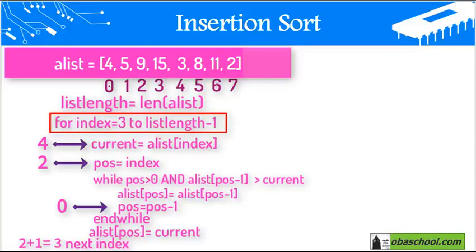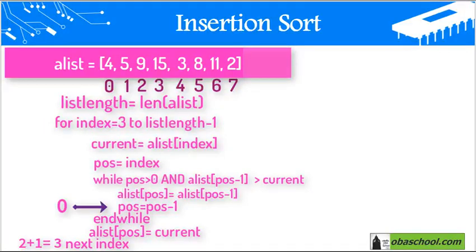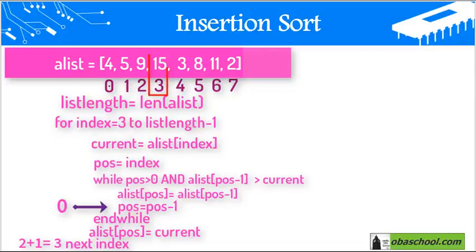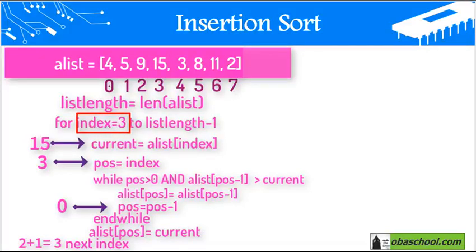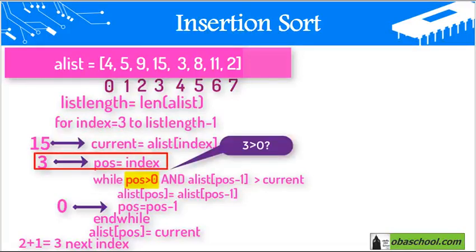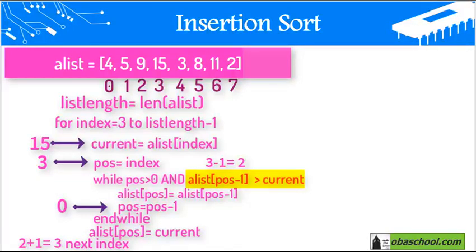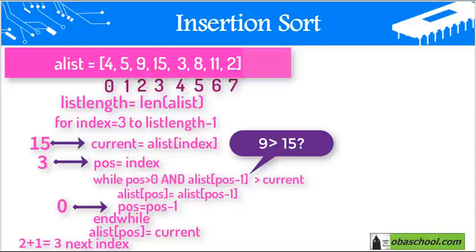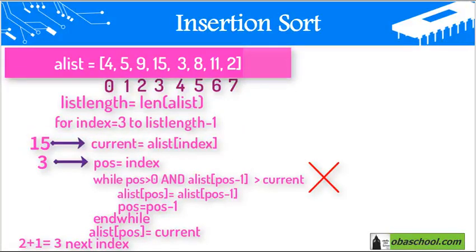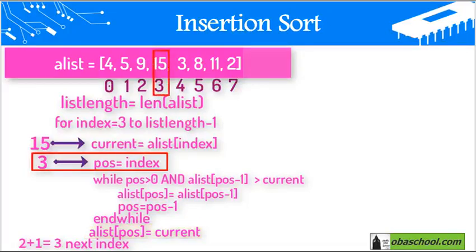For index equal 3 to list length minus 1, we are putting in variable current a list index which is 3. Index 3 contains 15, and then we continue to pause equal index. The index is 3, so pause takes value 3. We enter the while loop: while pause (3) is greater than 0, this condition is true. And list[pause-1], that is list[2], equals 9. Is 9 greater than the current value of 15? This condition is false. So we go directly to end while and put list[pause] at index 3 the value current, which is 15. The list stays as it is.